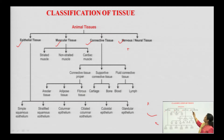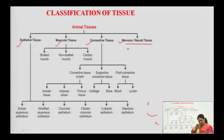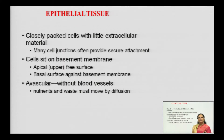Nervous or neural tissue, the fourth type, has no further subdivisions.